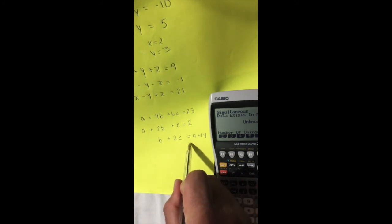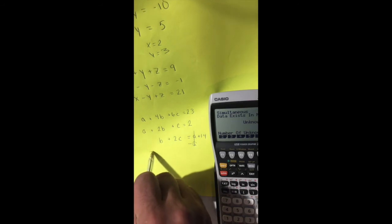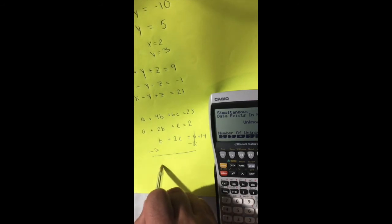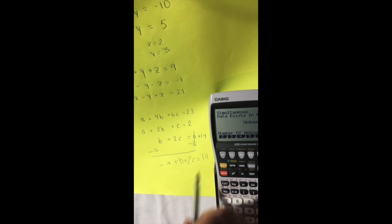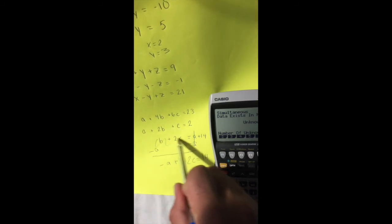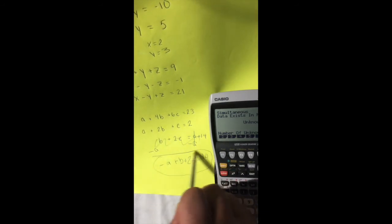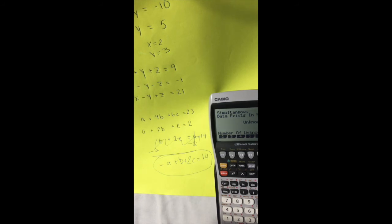So what you want to do is go ahead and move that and put it to the other side so that you have negative a plus b plus 2c equals 14. And now instead of using this, we're going to be using this as our third equation because it's in order. So it works out nicely.